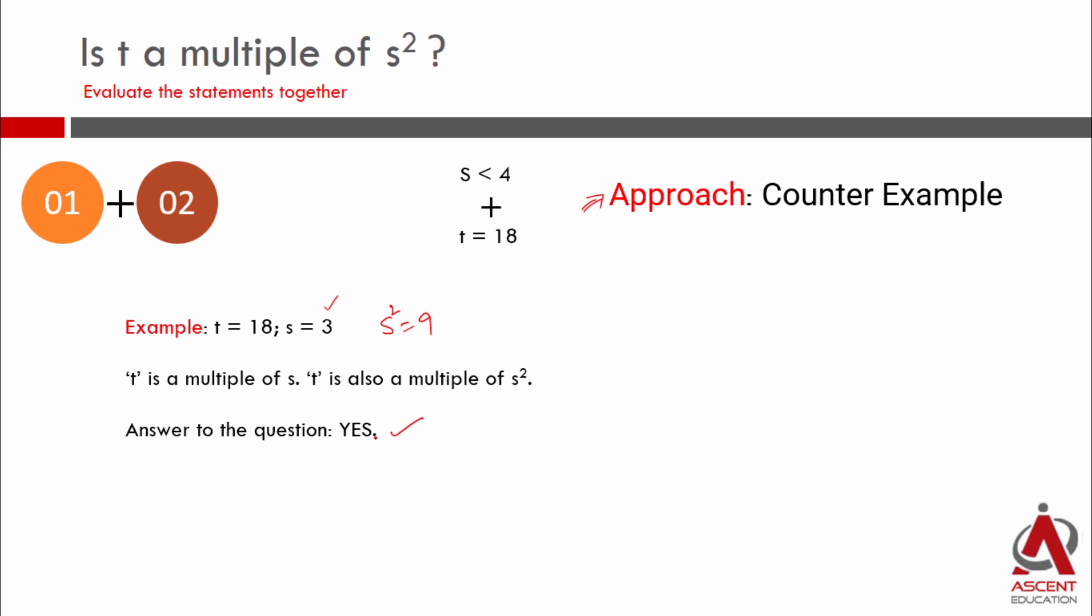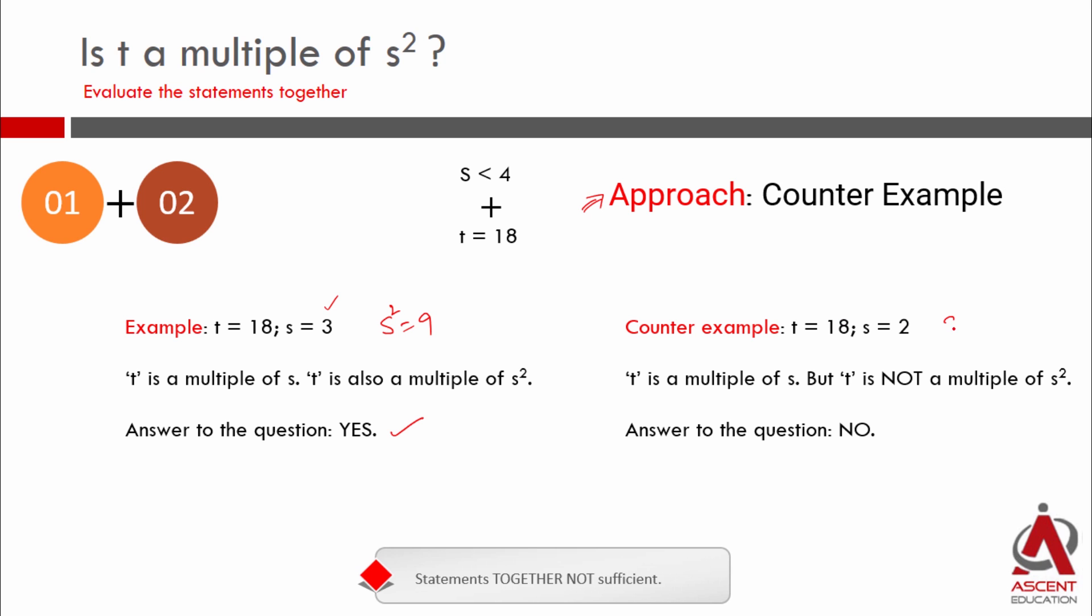So let's look for a counter example. The only option is t is 18. Let's make s equal to 2. If s is equal to 2, s square will be equal to 4. t is 18. Is it a multiple of 2? Yes. t is a multiple of s. Is 18 a multiple of 4? No. So is t a multiple of s square? Answer is no. If we combine two statements,